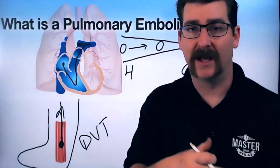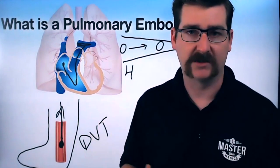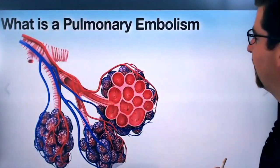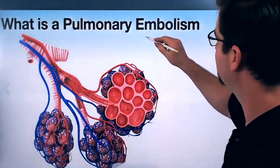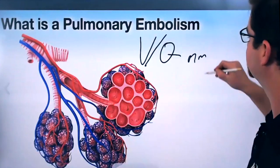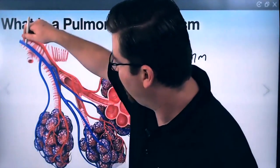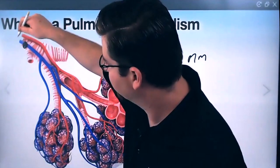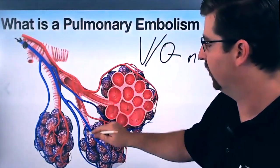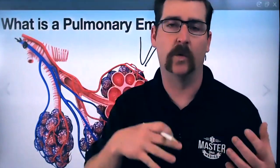That means there's going to be less blood returning to the lungs for oxygen exchange and all that kind of stuff. So what that causes is something called a VQ mismatch. In a VQ mismatch, we basically have poor perfusion because of a blood clot. There's not as much blood getting down to the alveoli, depending on where the clot is.